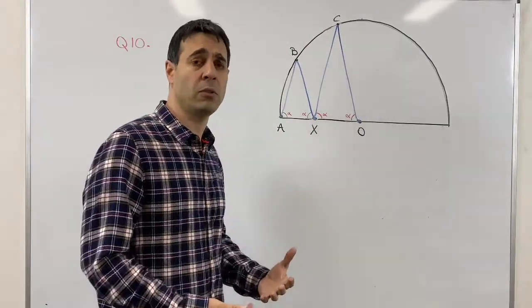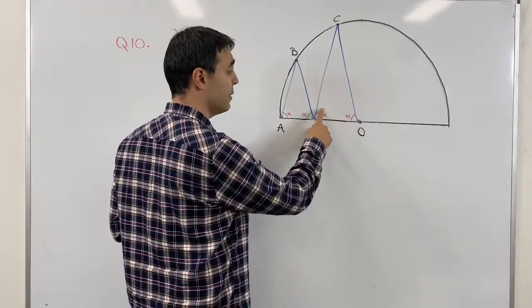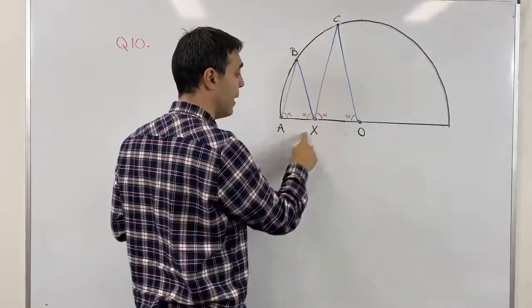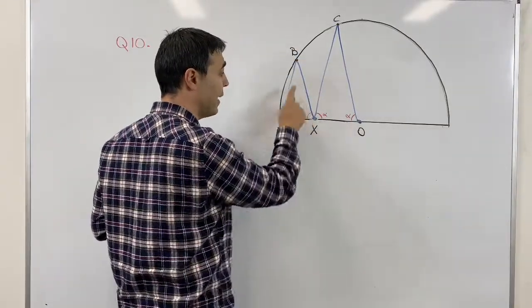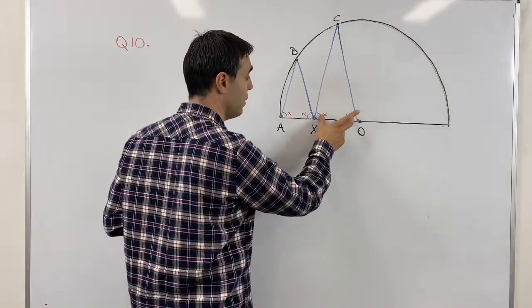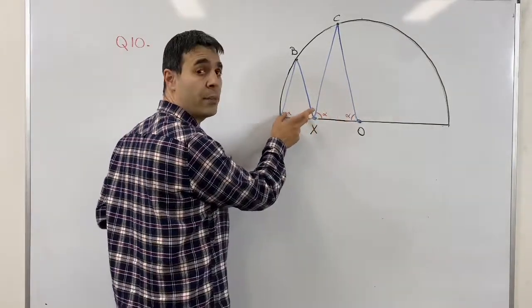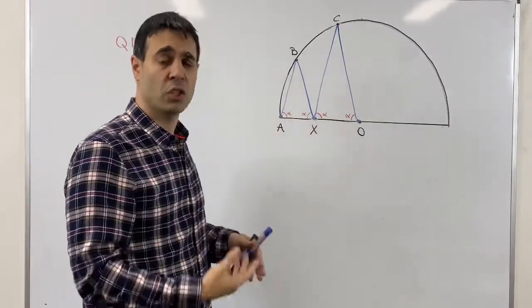First of all, we know this is alpha, this is alpha, so SXO is an isosceles triangle. BAX again is an isosceles triangle. Another thing we know is because these two angles are the same here, these two triangles should be similar.